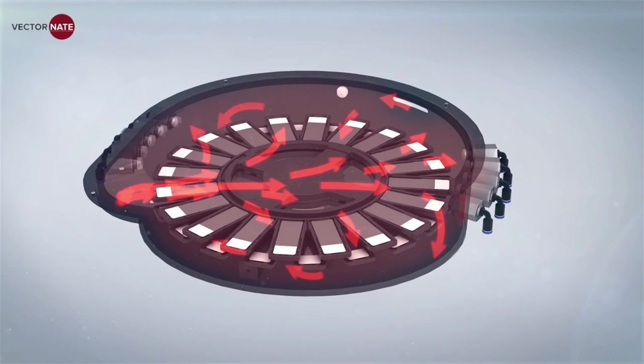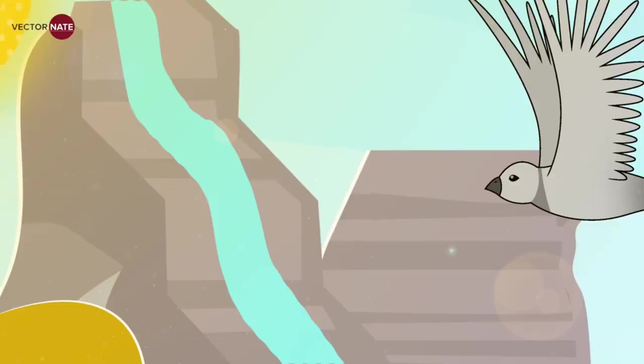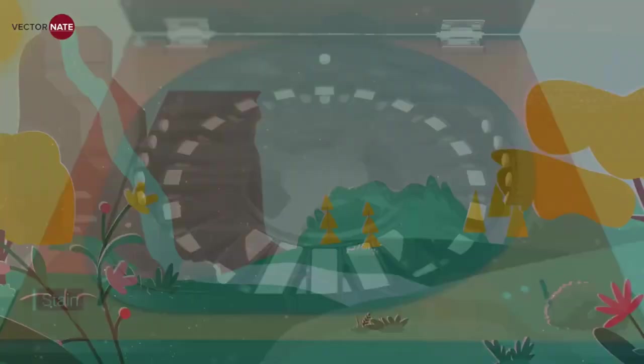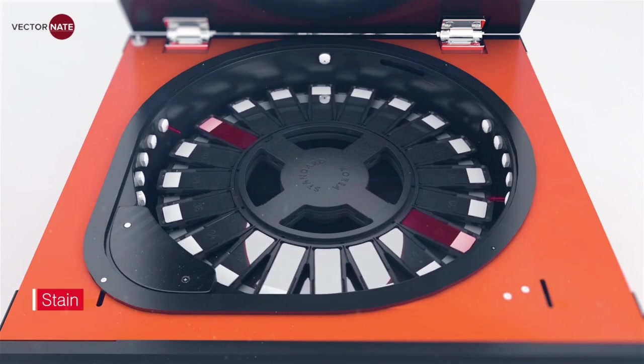Some flat method stainers use a robotic arm programmed with XY coordinates to pick up and apply solutions to slides located in a rectangular grid. Other instruments employ a rotating carousel and swinging arm. The arm picks up reagents and dispenses them as the slides move.